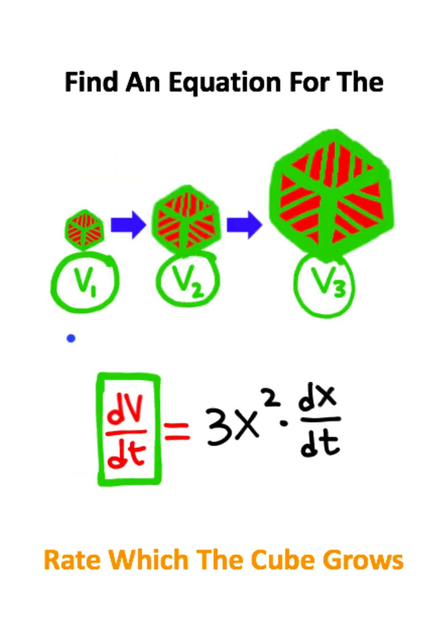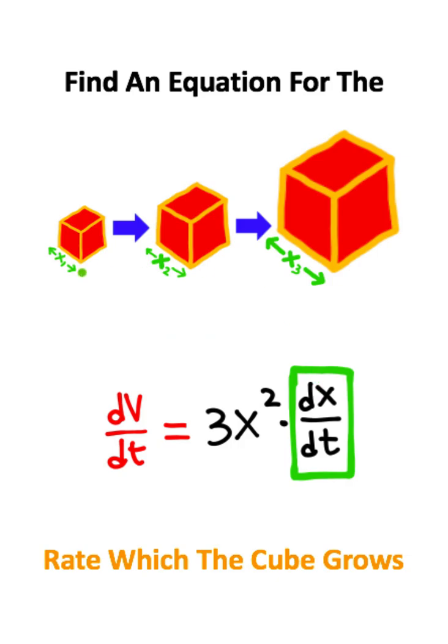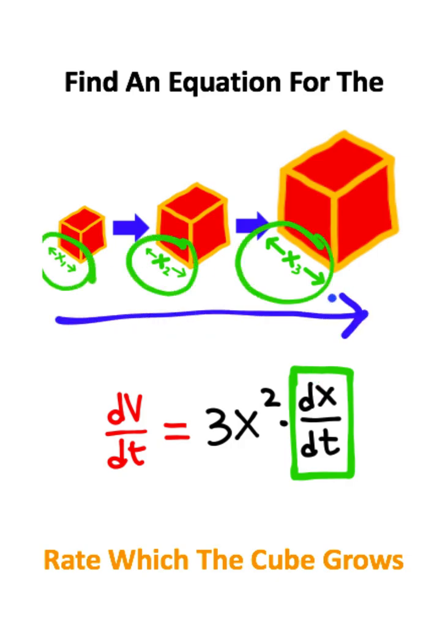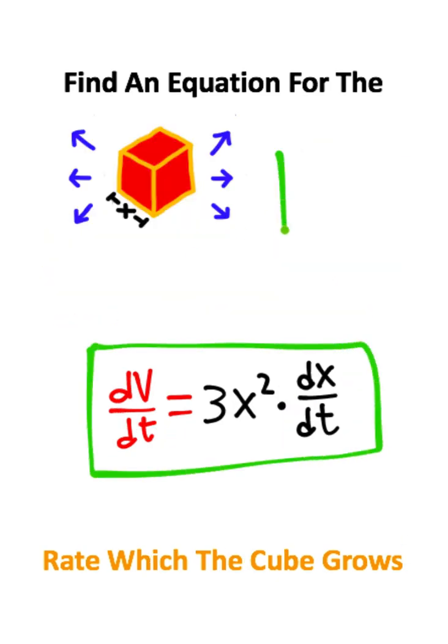dV over dt is telling you the rate at which the volume of the cube is growing. The dx over dt tells you the rate at which one side of the cube is growing. So this equation is the solution to the problem.